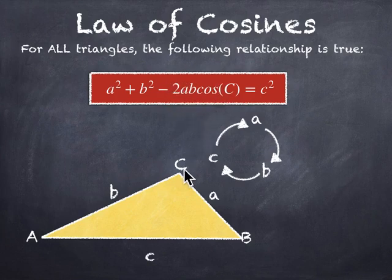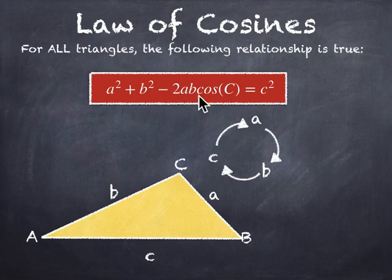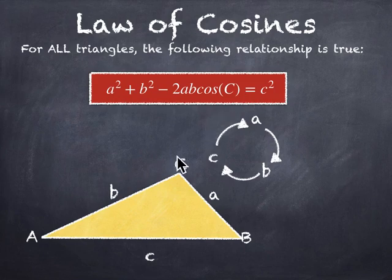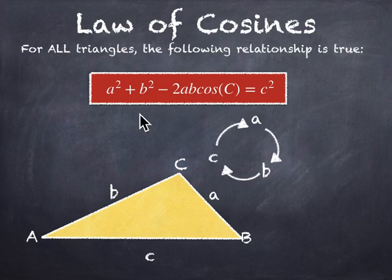If c is a 90-degree angle, then cosine of 90 is zero, and this term just goes away, giving you the familiar a squared plus b squared equals c squared. But if this is not a right angle, then this term adjusts for that.